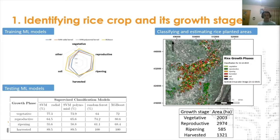From there, we were able to estimate that 2,003 hectares were in vegetative stage, 2,974 in reproductive stage, 585 in ripening, and 1,321 were recently harvested. This kind of information is useful for the National Federation to calculate the total production for a region. It also allows technicians to rapidly identify which areas should be affected by extreme climate events that are not favorable for any specific growth stage.